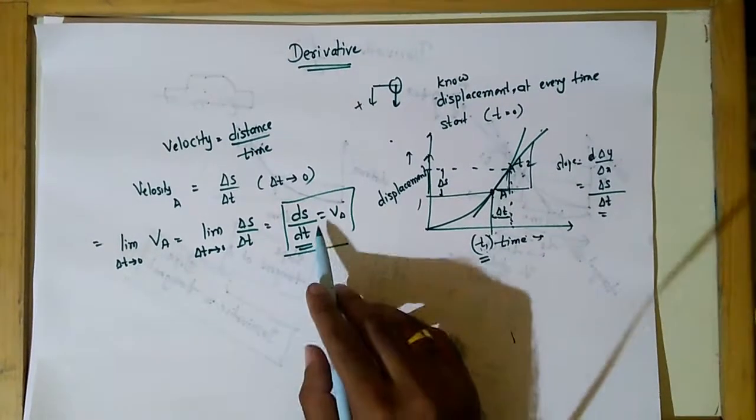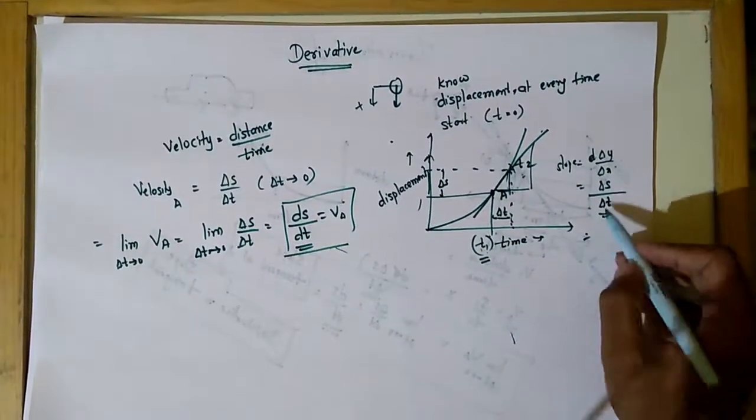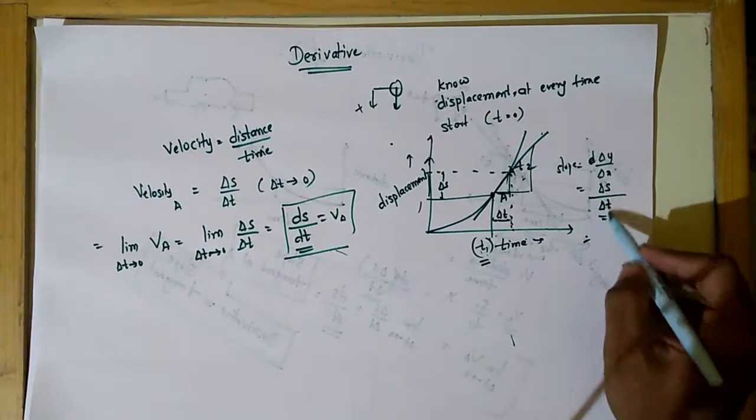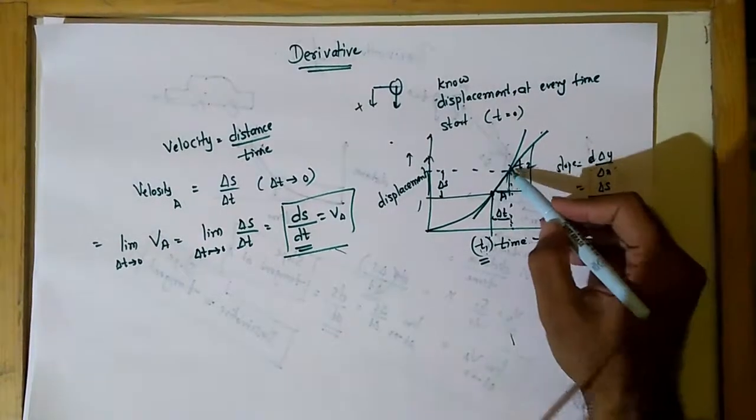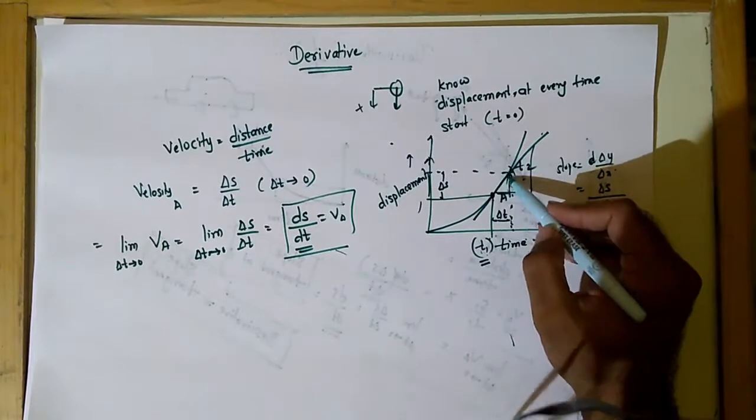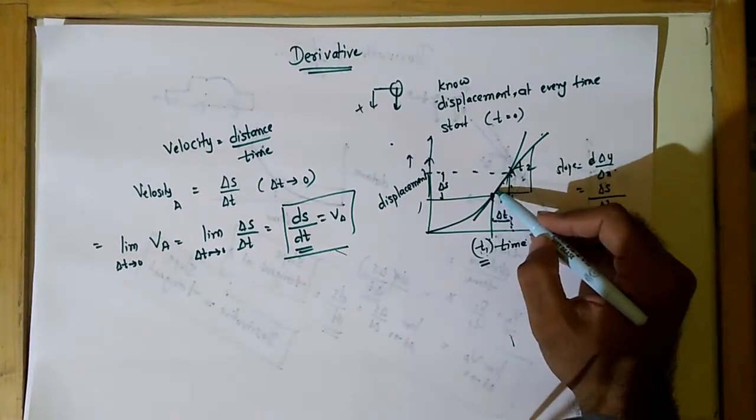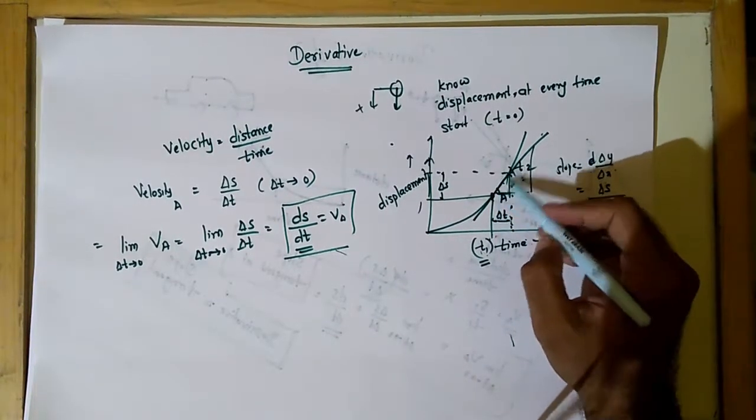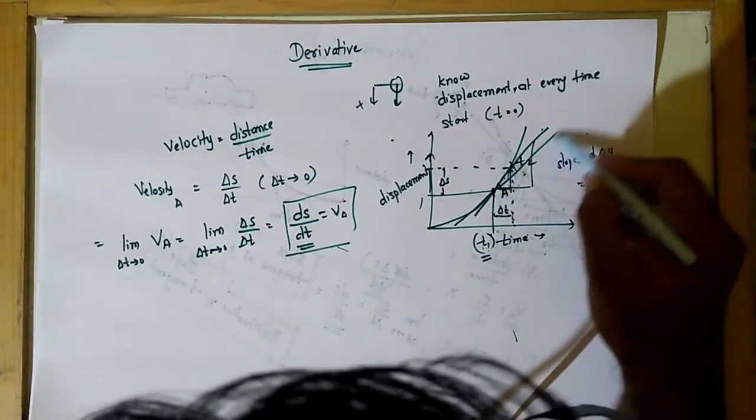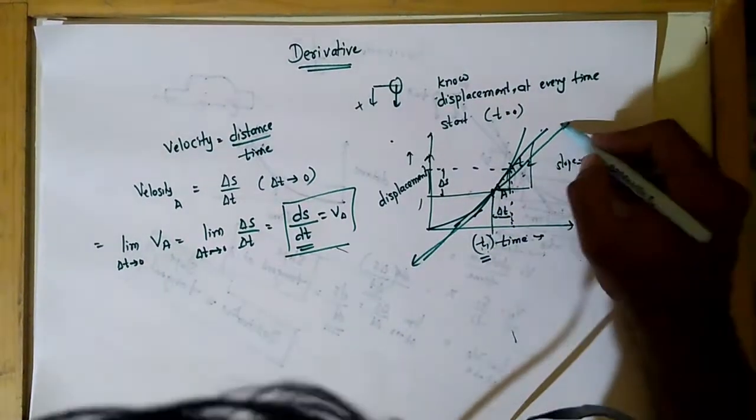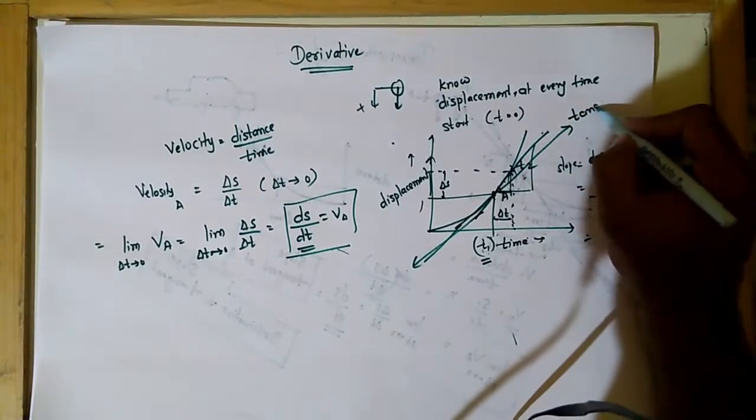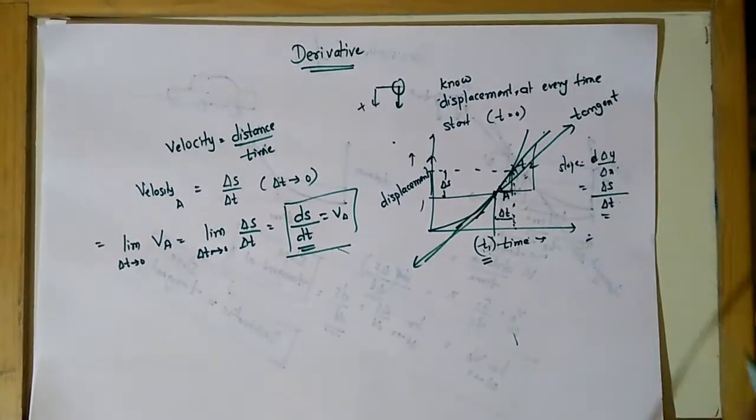Now graphically what we understand is if I reduce delta t to zero, if I bring this point t close and close to t1 such that time between t1 and t is zero, what I will get is the slope of this curve, and that curve is tangent.